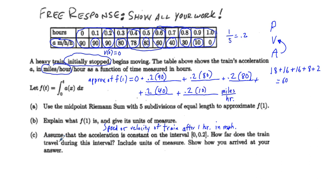And the last one in the free response problem, part C or D, is usually a little bit different, a little bit out of sync, requires another level of thinking. Assume the acceleration is constant interval from 0 to 0.2. How far does the train travel during this interval? Include the units of measure.